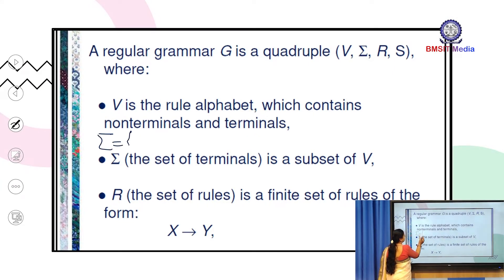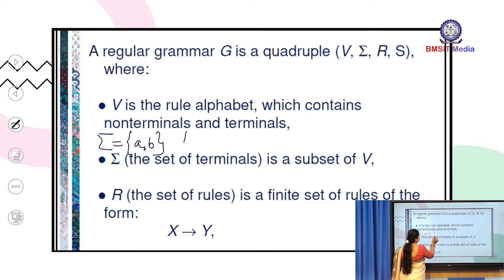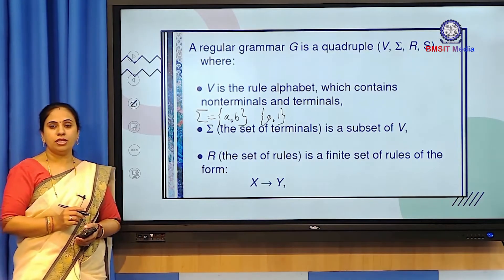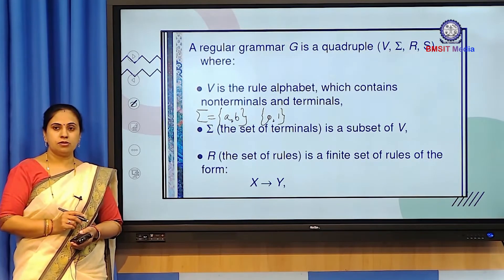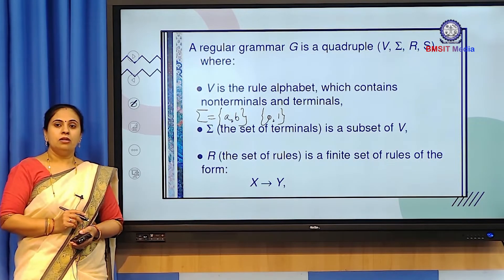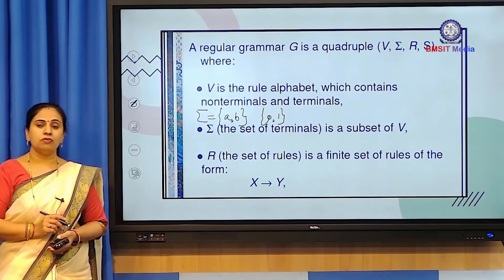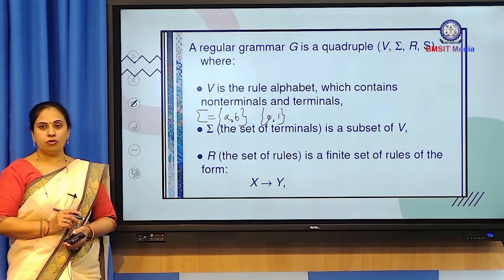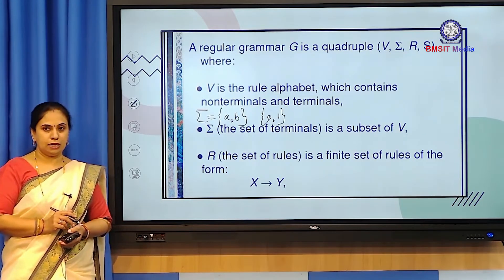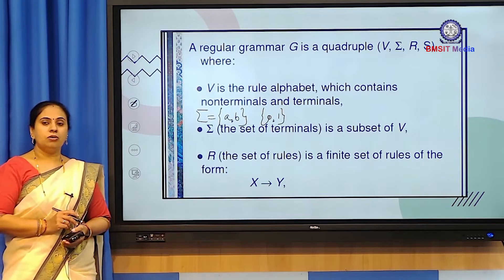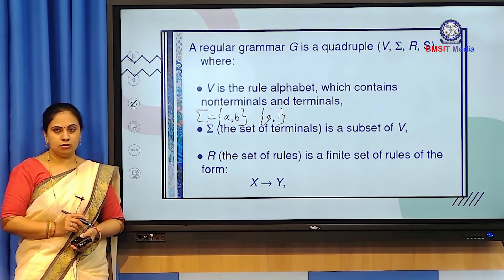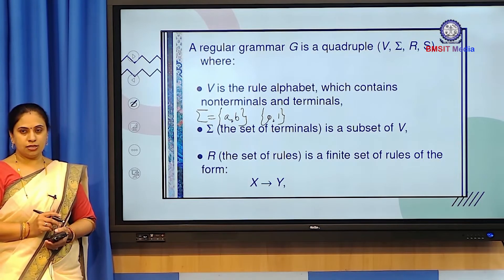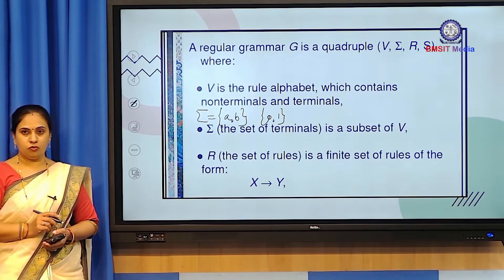Sigma is enclosed within curly brackets and could be {a, b} or {0, 1}. Depending upon the definition of the regular language, sigma varies — that is the input symbol. The next entity in the definition of regular grammar is capital R, which is the set of rules that define the grammar.